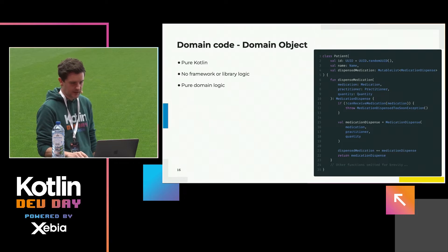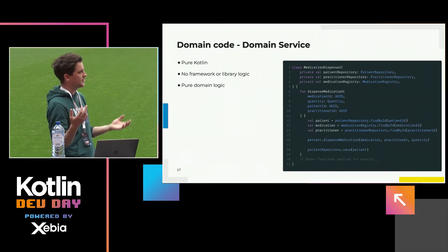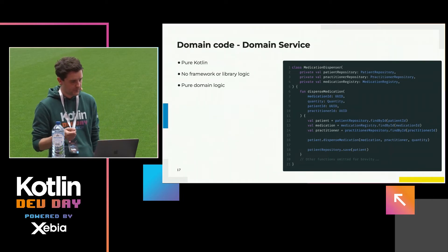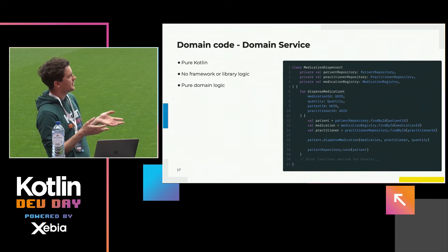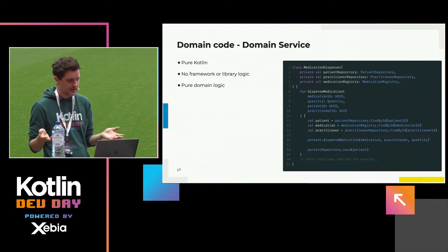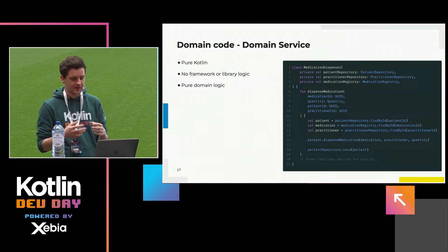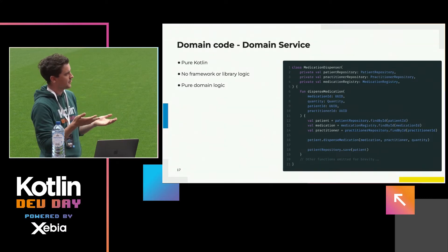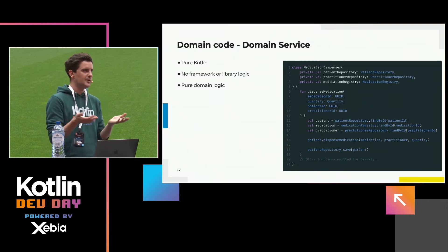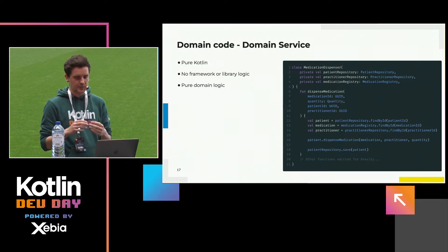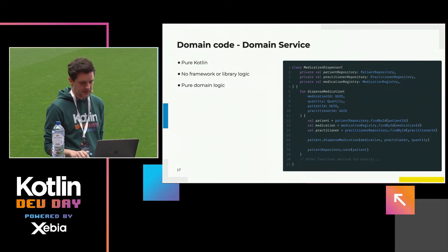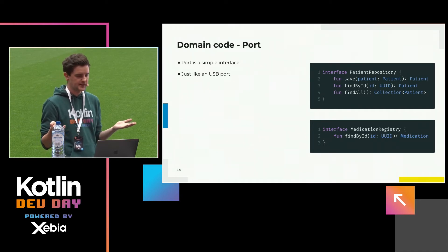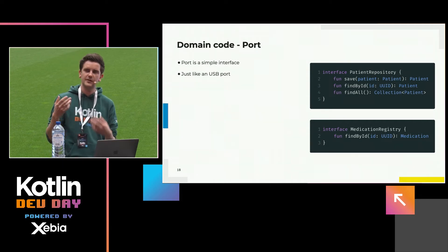This code can be executed by itself — you have a domain object. Then we need a domain service, so data can be retrieved from the database, an operation can be executed on it, and the result stored. This domain service is also pure Kotlin, no framework or library logic, only focusing on the behavior of our application. You can see I'm using a PatientRepository and a MedicationRegistry — these are ports, interfaces which will supply a runtime implementation that the domain service can use.